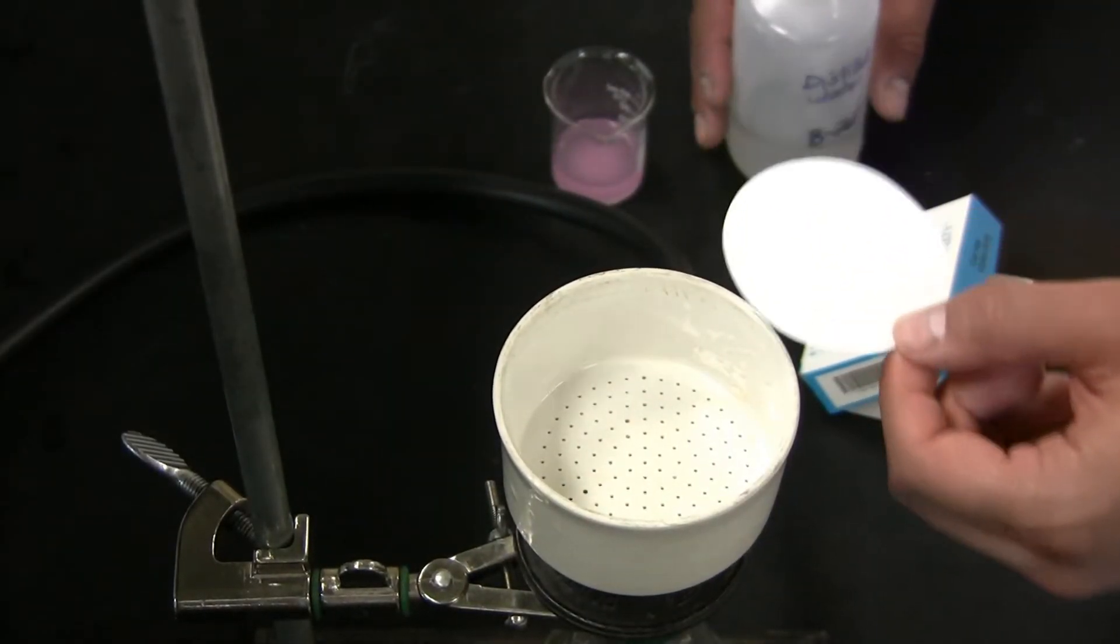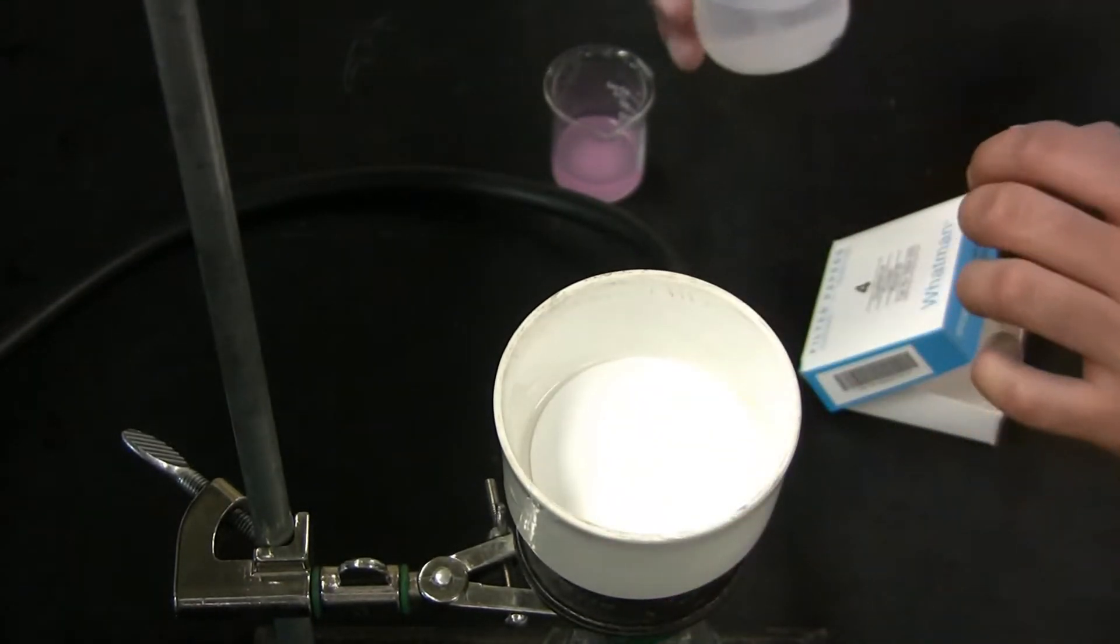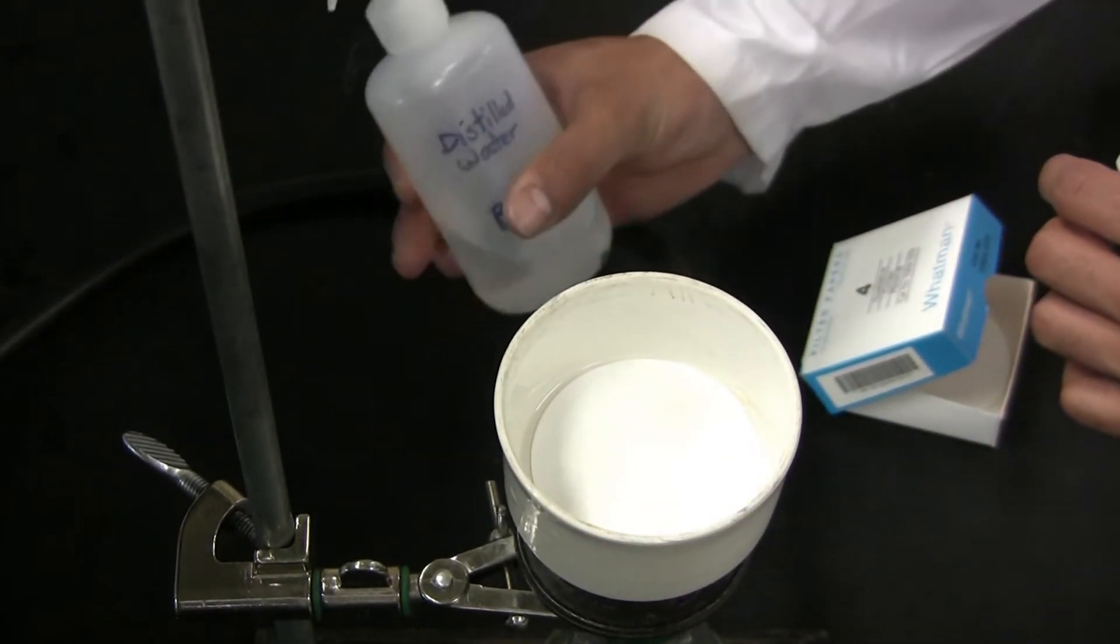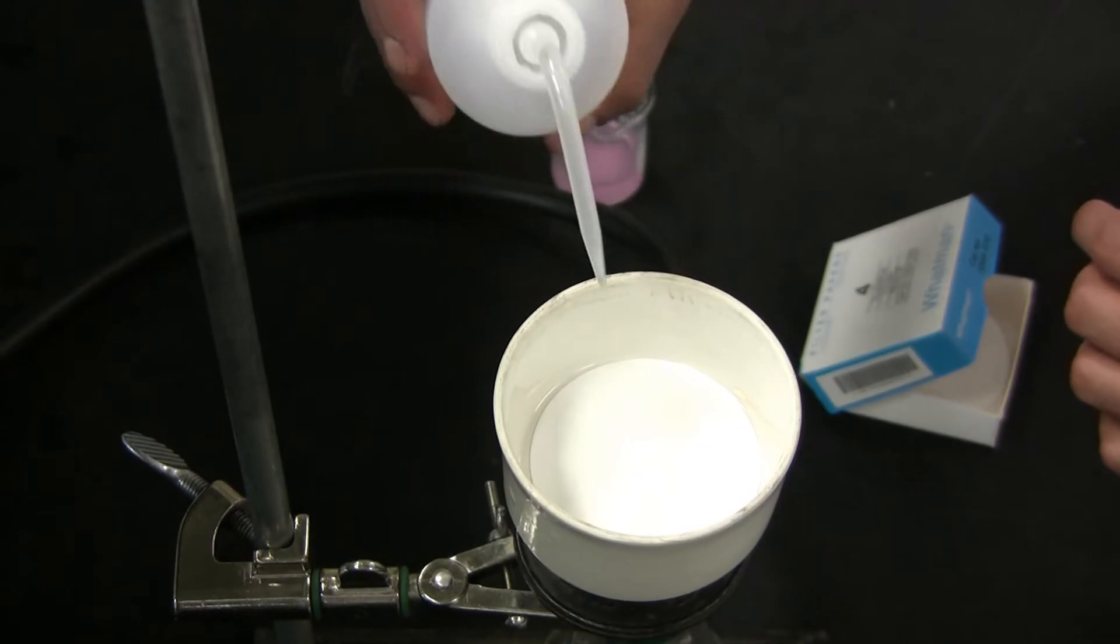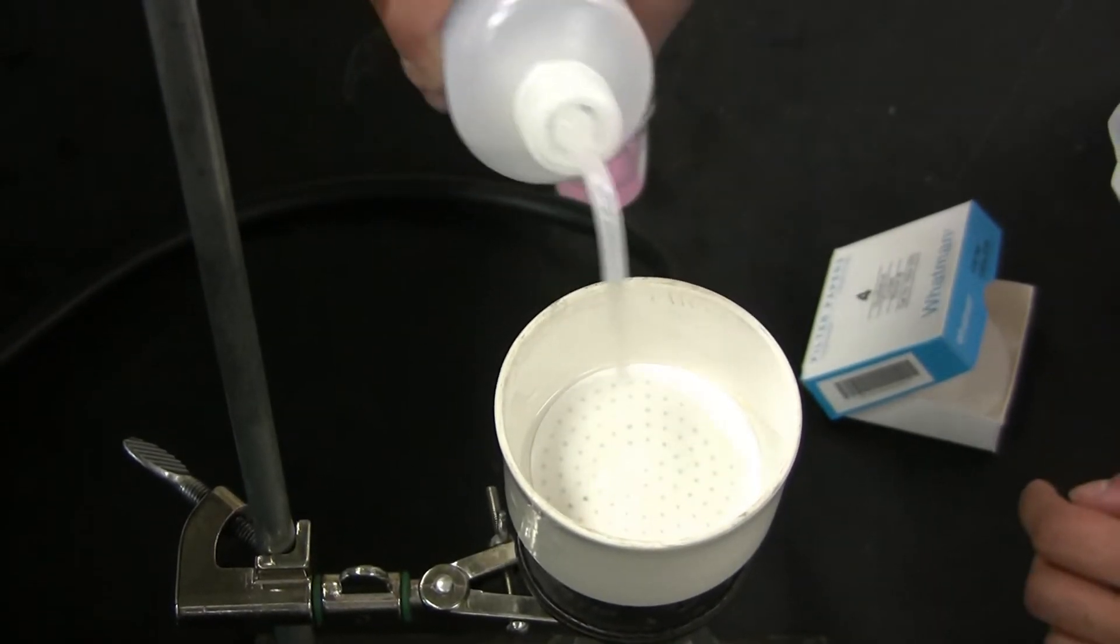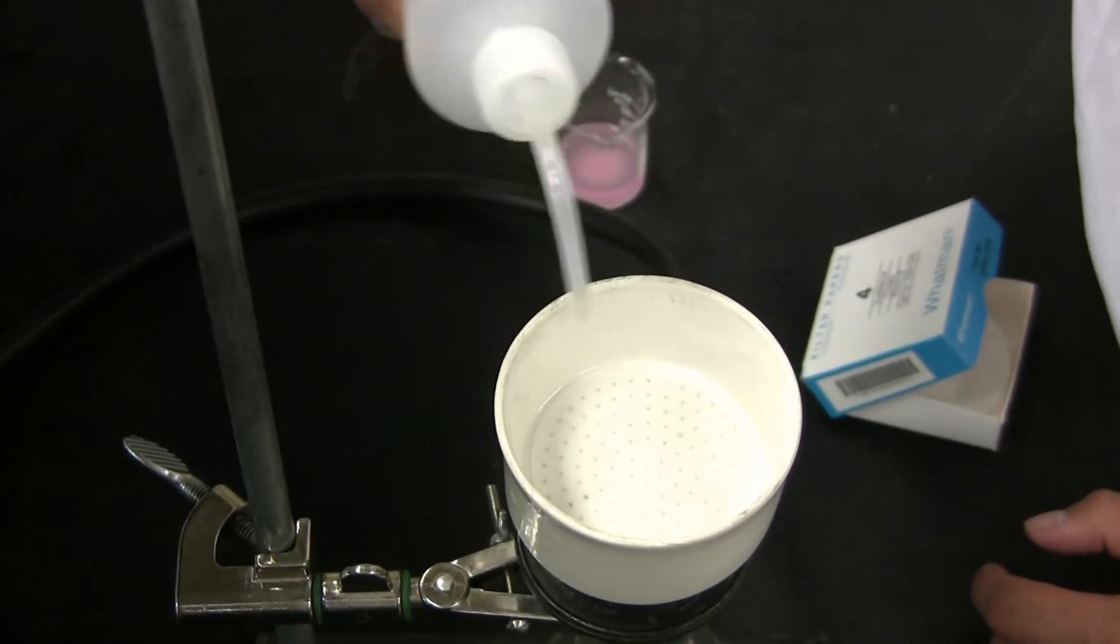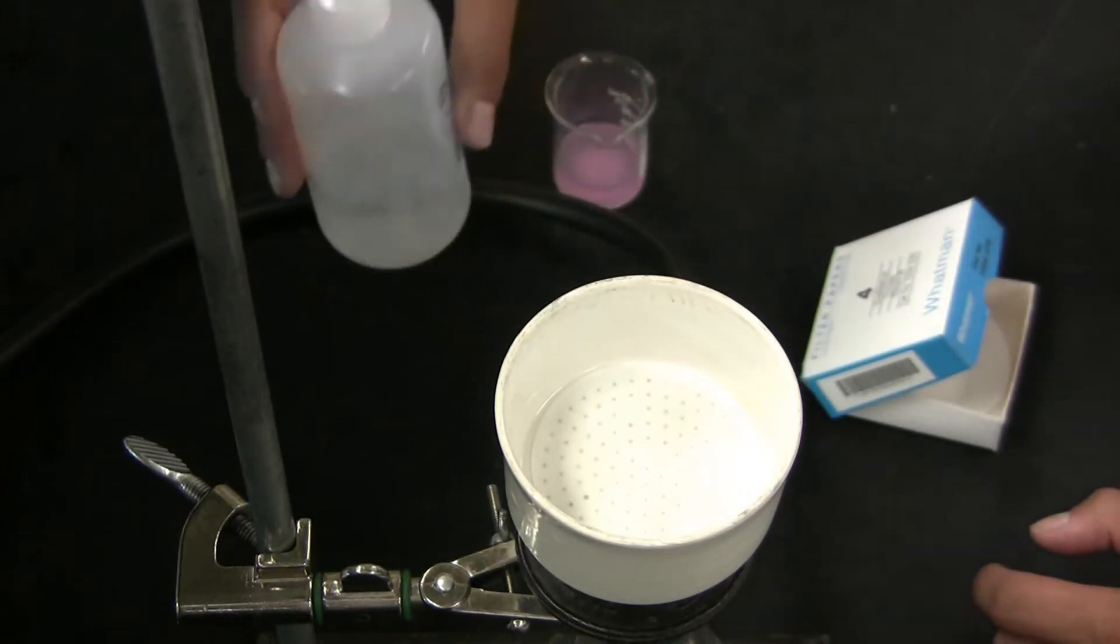Place a piece of your filter paper into the Buchner funnel. Using your solvent, in this case distilled water, make sure that it is stuck to the bottom of the Buchner funnel. Also, ensure that it does not curl up.